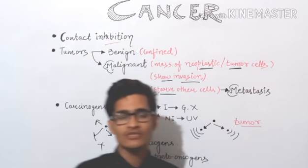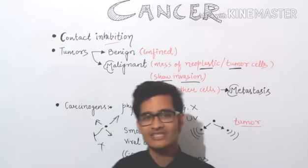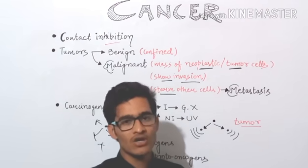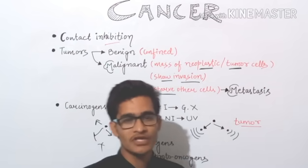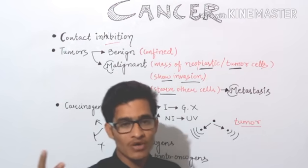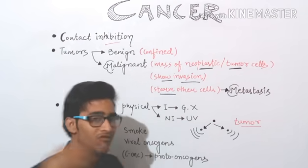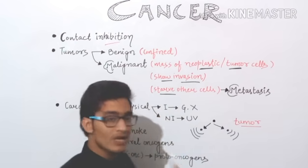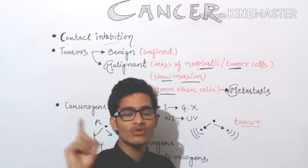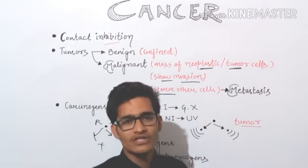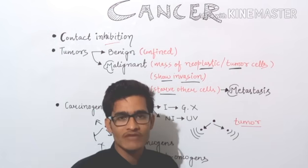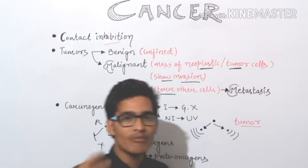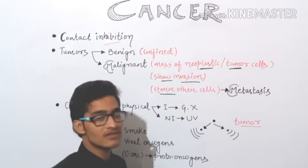Tumor cells will compete with normal cells for nutrition in an individual. This is an important property of malignant tumor. The tumor cells will starve other cells — starve means they will not let normal cells eat well. Because they will derive nutrition before it can reach normal cells, there is a kind of competition between tumor cells and normal cells.